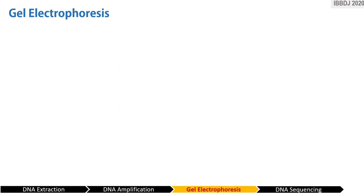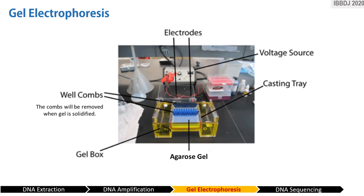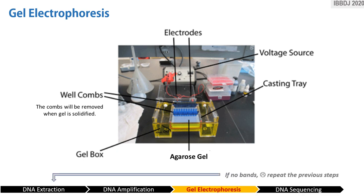Gel electrophoresis only confirms the presence of DNA that was extracted and amplified. If the resulting gel shows no bands, then theoretically, DNA extraction and amplification was not successful, and researchers may opt to repeat the process until bands are present.